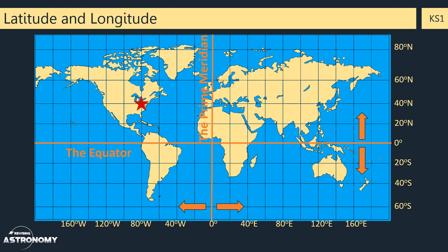Let's work out the latitude and longitude of this point, represented by a star on our map. Firstly, we'll work out the latitude.